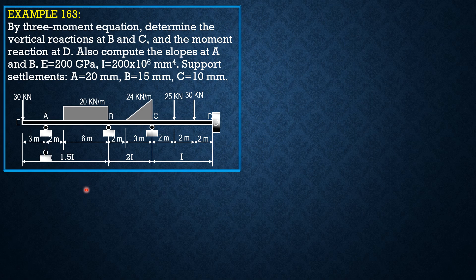These are the positions of the supports after moving downwards, or settling by 20 mm, 15 mm, and 10 mm at A, B, and C respectively.